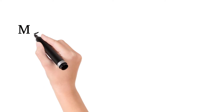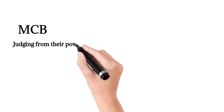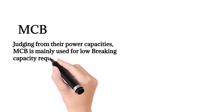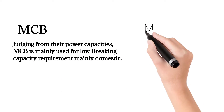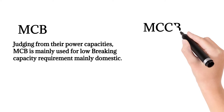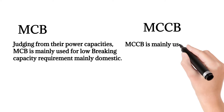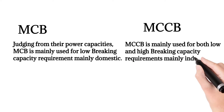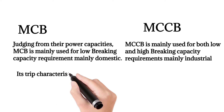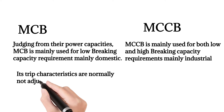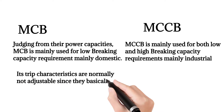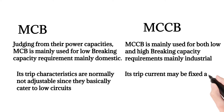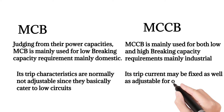Judging from their power capacities, MCB is mainly used for low breaking capacity requirements, mainly domestic. MCCB is mainly used for both low and high breaking capacity requirements, mainly industrial. MCB trip characteristics are normally not adjustable since they basically cater to low current circuits. For MCCB, its trip current may be fixed as well as adjustable for both overload and magnetic settings.